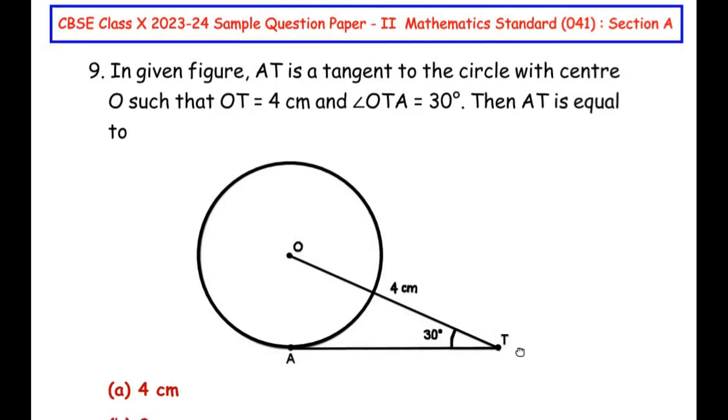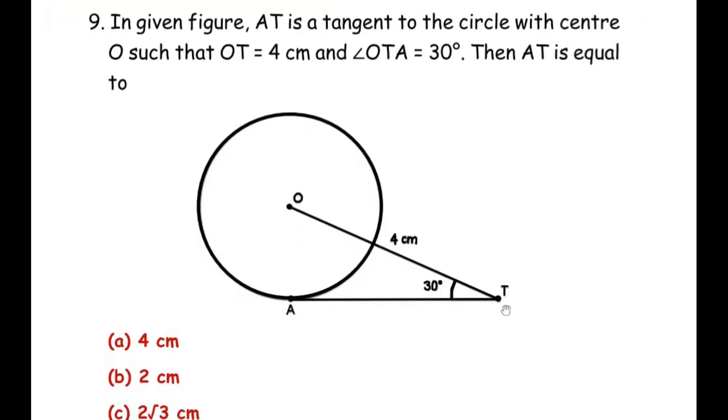Now here we have to find out what is the length of AT. So let me make a small construction here first. You can see that I have joined the radius OA to the tangent. And from the radius tangent theorem, we know that the radius always makes a 90 degree angle with the tangent. So we have formed a right angle triangle OAT, right angled at A.